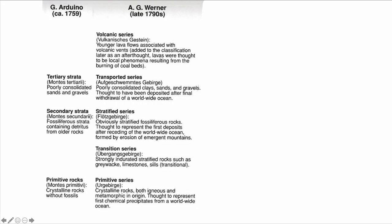Then Werner, in the late 1700s, came up with a more complex subdivision, where he recognized the primitive series, which were crystalline rocks. Interestingly, at the time he thought these crystalline rocks represented the first chemical precipitates in the ocean — he did not realize they were actually plutonic rocks. He then recognized the transition series, which was strongly stratified rocks, and then the stratified series that was more obviously stratified with fossiliferous content.